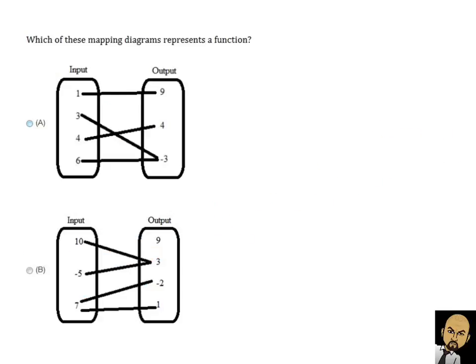Let's take a look at another example. Which of these mapping diagrams represents a function? Remember, each input must only be paired with one output in order to be a function. In example A, the one is paired with nine, three is only paired with negative three, four is paired with four, and six is also paired with negative three. Even though six and three share an output, each input is still only paired with one output, so that is a function.